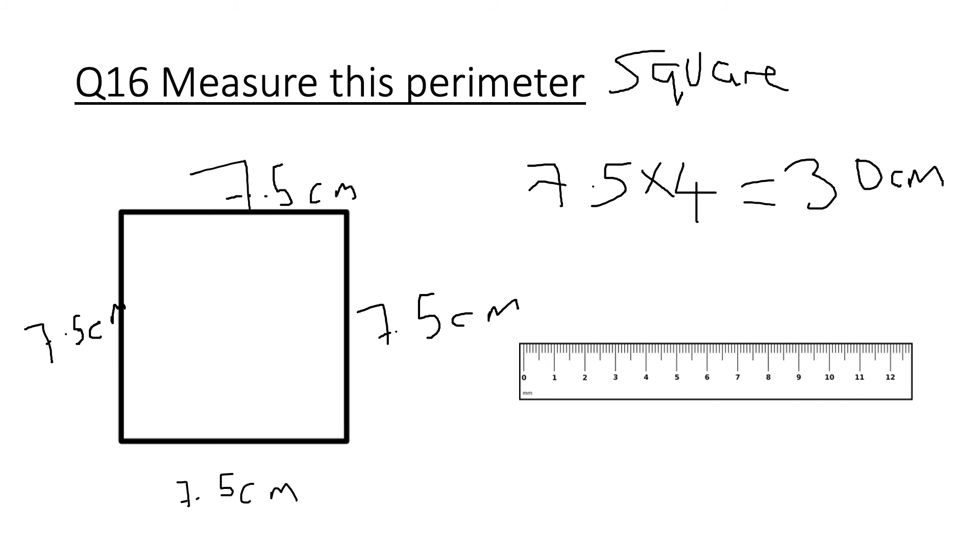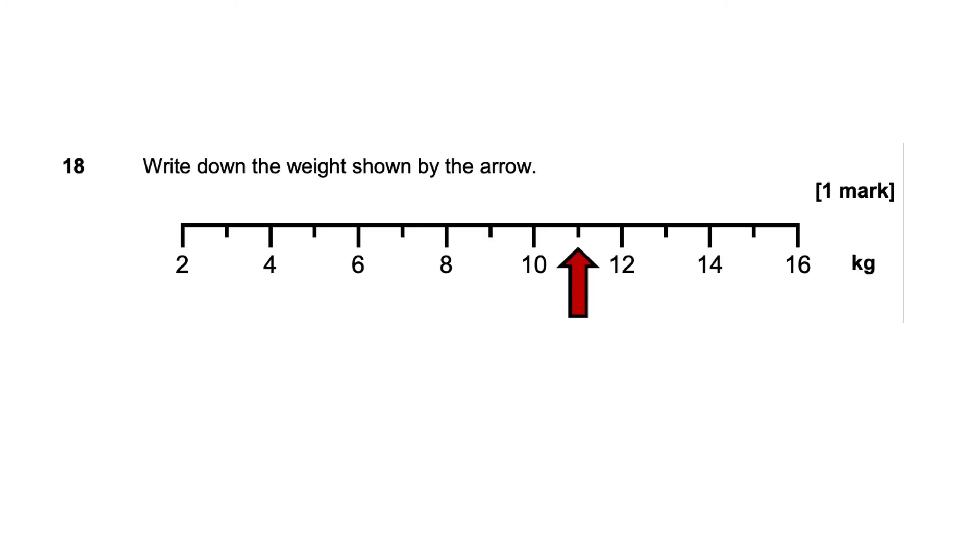Question 18, write down the weight shown by the arrow. Well here is going to be 11 kilograms. It goes up in ones every time: 11, 12, 13, 14, 15. So that's going to be 11 and then it's kilograms.